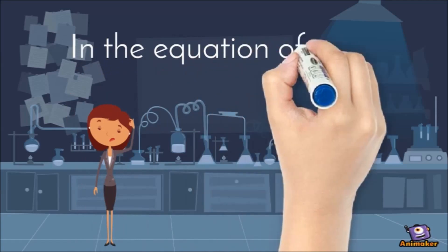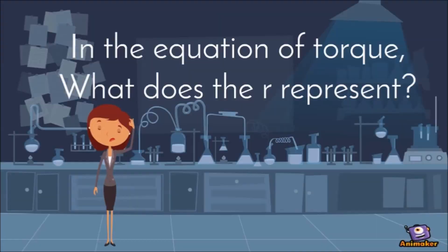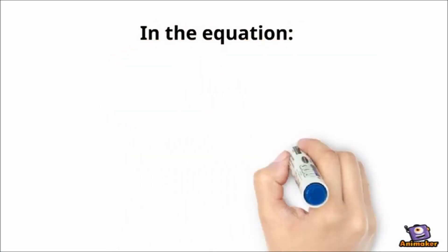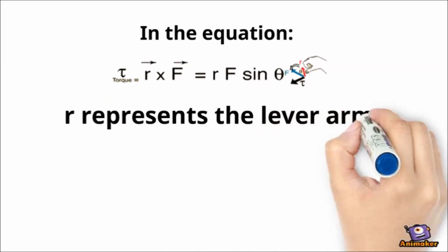In the equation of torque, what does the R represent? Alice can you please explain it? Sure John. In the equation, T is equal to R F sine theta. R represents the lever arm.